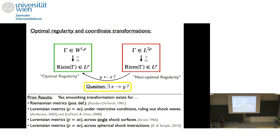One step toward handling these interactions was done in prior work by myself and Temple, where you also get a positive resolution — but it's highly restricted to spherical shock waves and requires many assumptions on the shock interactions, making it very tedious. For the general shock solutions from the Glimm scheme, you have insufficient information about the shock surfaces and positions. The only information available is what the Riemann curvature is doing — that abstract information is all you have to work with.